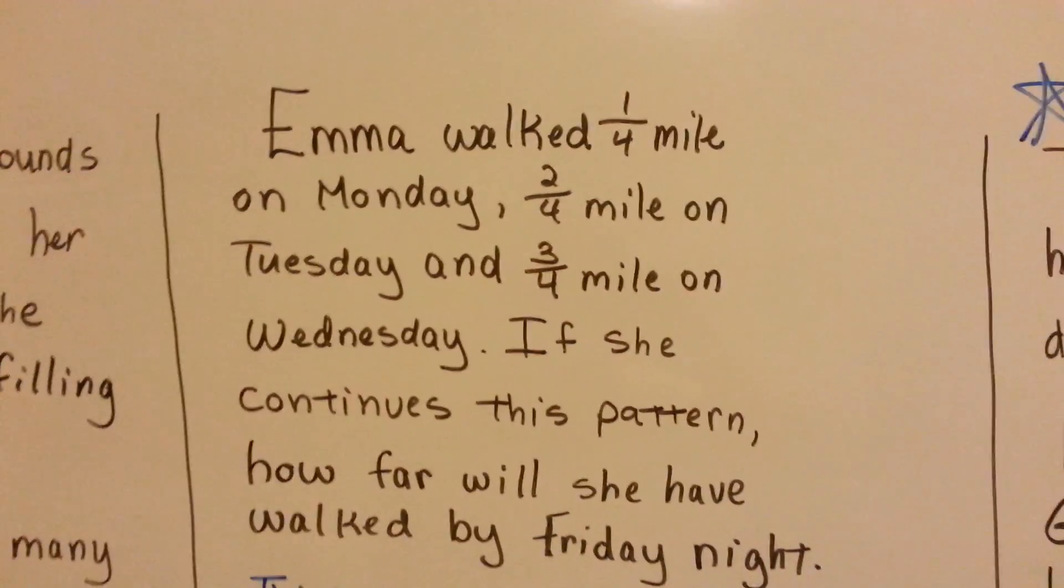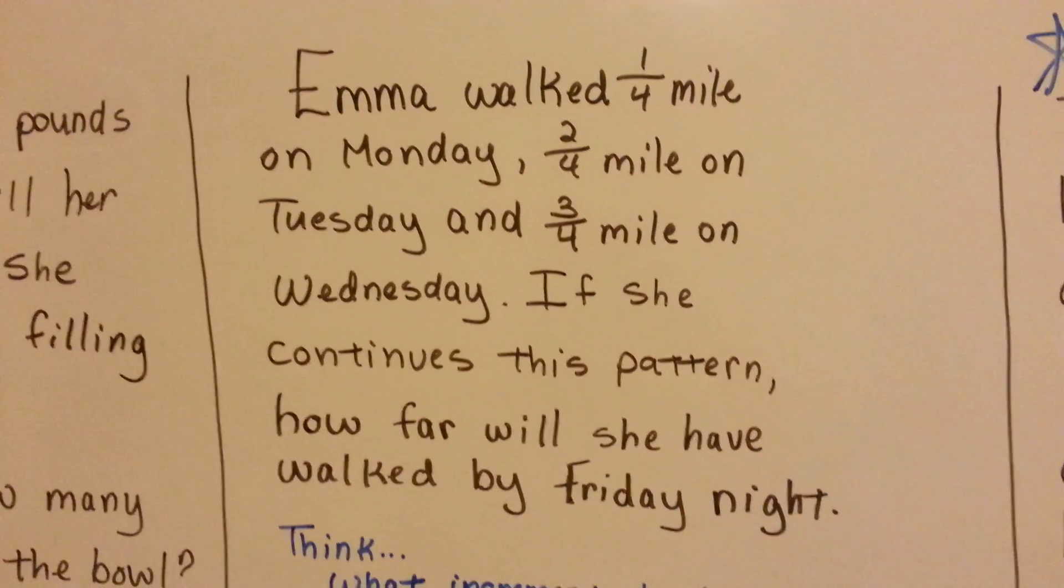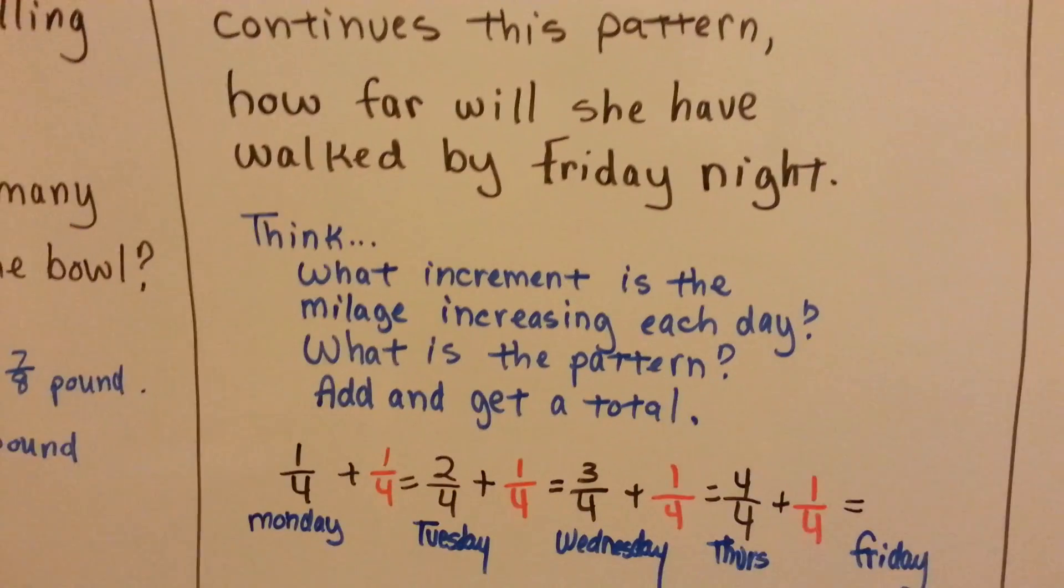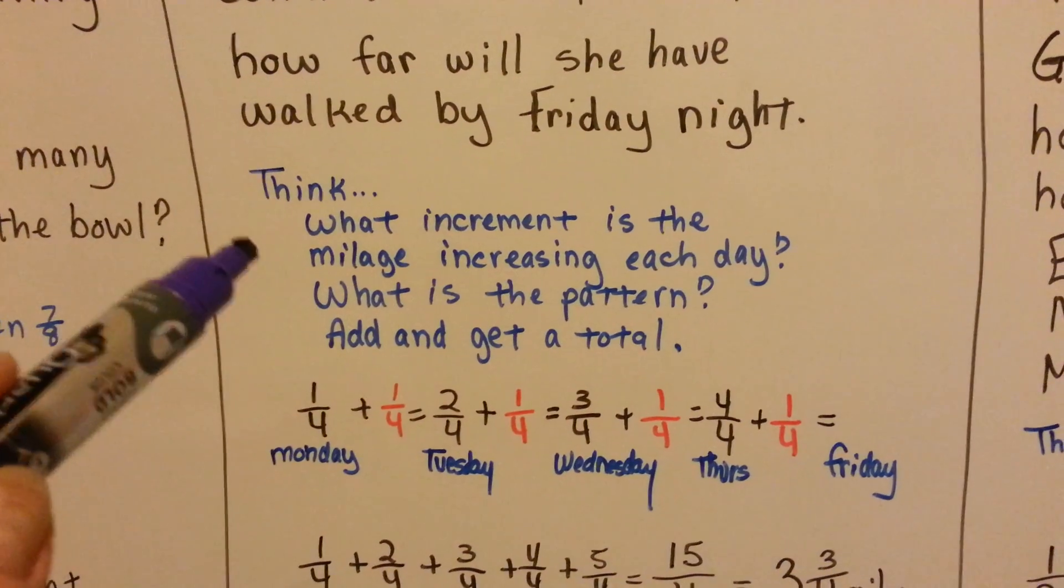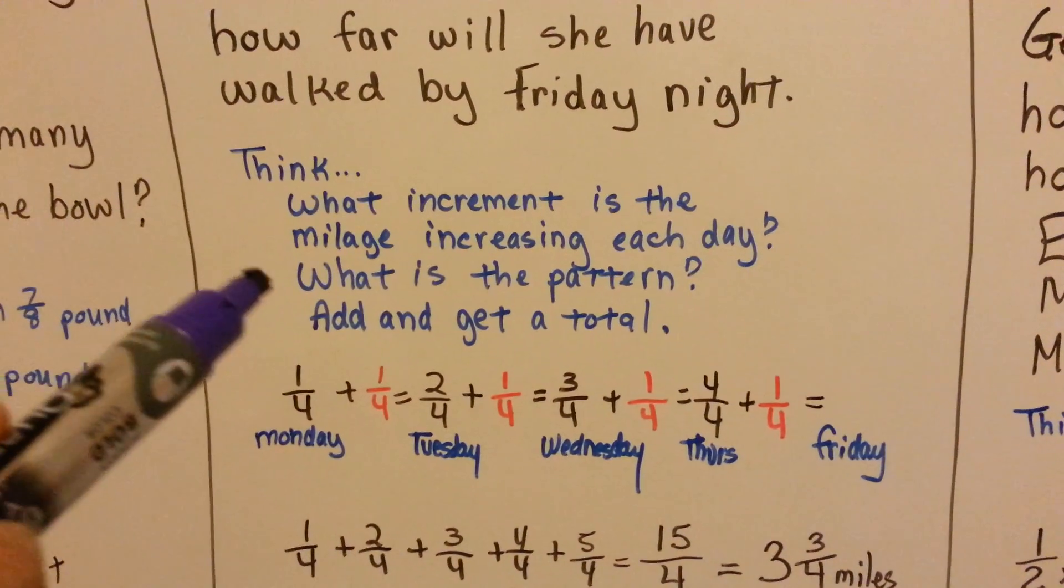We know we can make pictures to help us figure out a problem. Emma walked 1 fourth mile on Monday, 2 fourths mile on Tuesday, and 3 fourths mile on Wednesday. If she continues this pattern, how far will she have walked by Friday night? We think to ourselves, what increment is the mileage increasing each day? What is the pattern? Then we add and get a total.